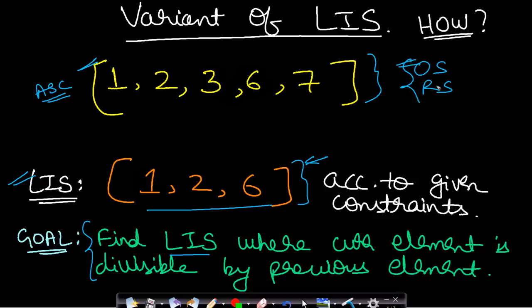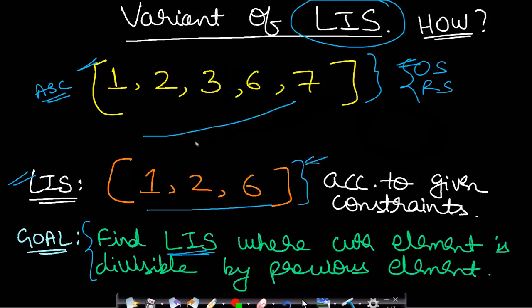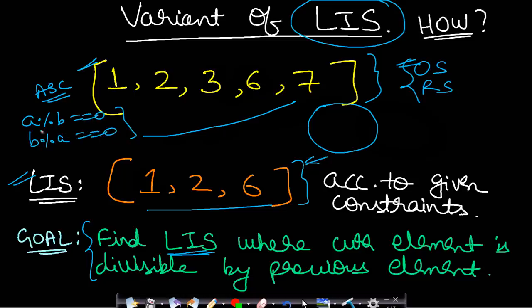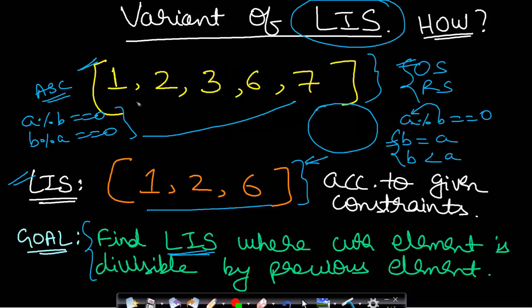If you are confused about optimal substructure and overlapping subproblems, I recommend watching the video on Longest Increasing Subsequence — the link is in the description. Now, how do we convert this problem to LIS? In the original problem our constraint is: a mod b equals zero OR b mod a equals zero. The condition a mod b equals zero holds only when b equals a or b is less than a — that is, b divides a.